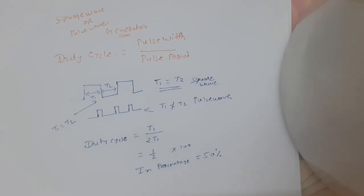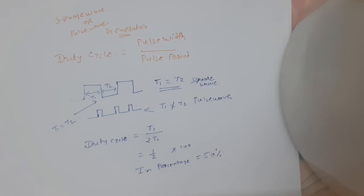Requirements of a pulse: first, the pulse should have minimum distortion, so that any distortion in display is due to the circuit under test. Second, the basic characteristics of the pulse are rise time, overshoot, undershoot, and ringing. Third, the pulse should have sufficient maximum amplitude if appreciable output power is required by the test circuit.